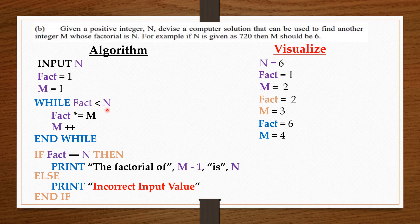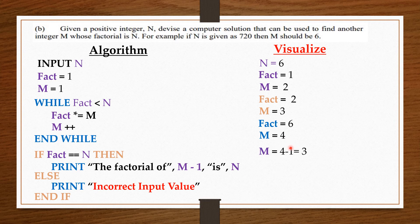So, we check if the fact is equal to N, then it's a factorial of it. Since fact is 6 and N is 6, then it's a factorial of it. And then we can see that M is 4, and that is 1 more than the value we actually need. We know that 3 factorial is actually 6. So, when we take 1 from M, you're going to get the actual value. So, we have M minus 1, which is 3. So, the factorial of 3 is going to give us 6.